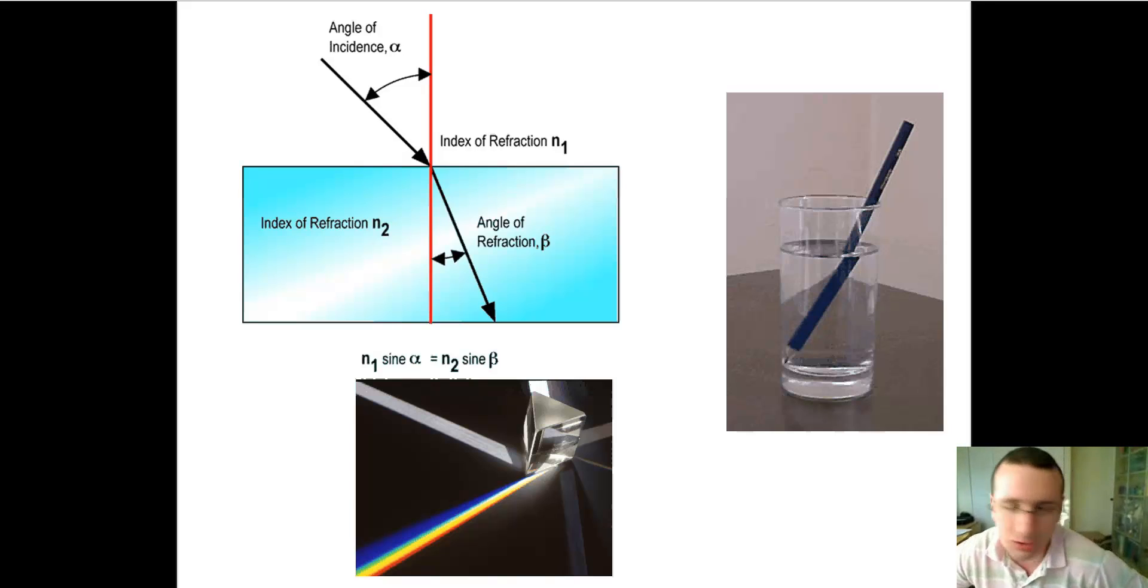Let's talk about the change in speed first. But first of all, understand that an example of reflection would be a mirror. And an example of refraction would be a prism that's splitting the light in a rainbow or a pencil sitting in a glass of water that seems to be bent because the light is changing directions as it hits the water. So let's talk about how that actually happens.